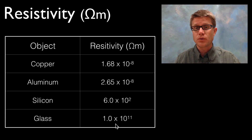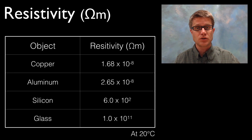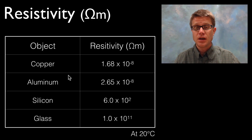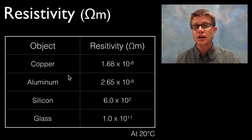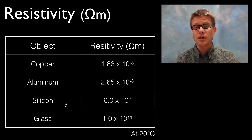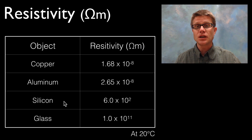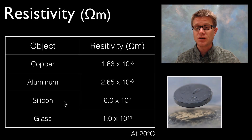Something else to always look for in a table like this is the temperature, because the resistivity of materials will change radically as temperature changes. For metals, as we increase temperature we also increase resistivity — in other words, the best conducting metals perform best at the lowest temperature. But for semiconductors we find the opposite: as we increase temperature, resistivity actually goes down. And certain metals — superconducting metals — have essentially no resistivity, which is what we see here with a magnet hovering on top of this superconducting metal.